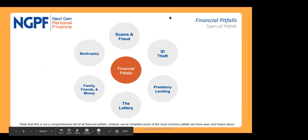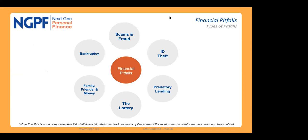This is how our unit on financial pitfalls is structured — it's split between six topics. It's a little more disjointed than some of our other units because it's not as though one builds on top of the other. You don't need to do ID theft first so that students understand predatory lending — those are two fairly discrete topics, but they all lump together into a unit of financial pitfalls.